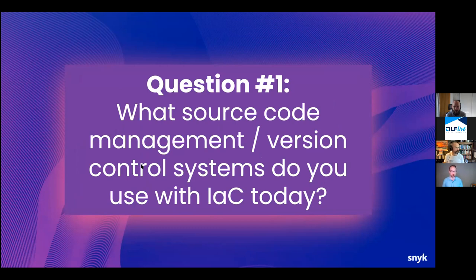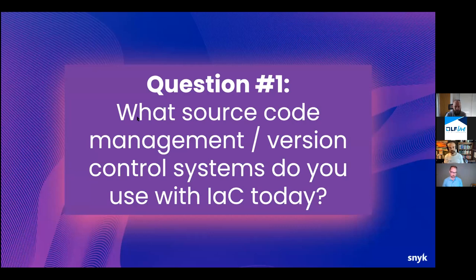What source code management or version control system are you using today with IaC, if you're using anything? We've seen everything — people who have nothing, just files on their local system, people who have shared folders, and people with various Git-like systems. Most people are leaning towards some sort of Git repo, which is a great first step.